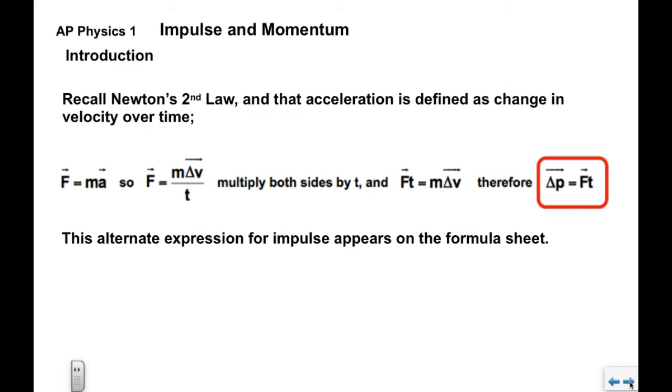Now, we'll take a quick look at Newton's usage here. Recall Newton's second law. Acceleration is defined as the change in velocity over time. If we say F equals MA, we can define A as delta V over T. Multiply both sides by T and we get F times T equals M times delta V.